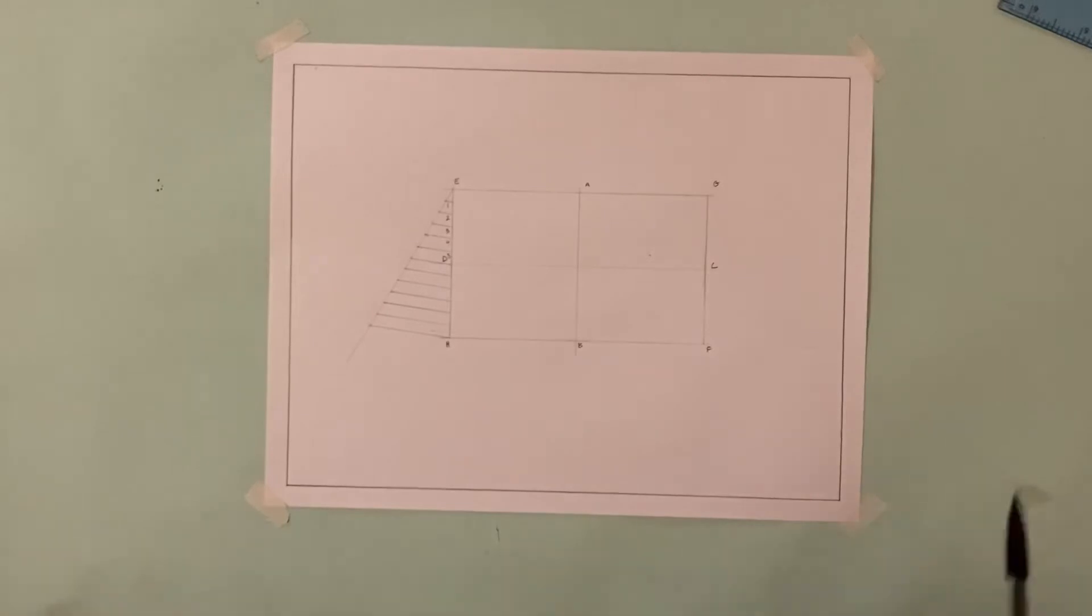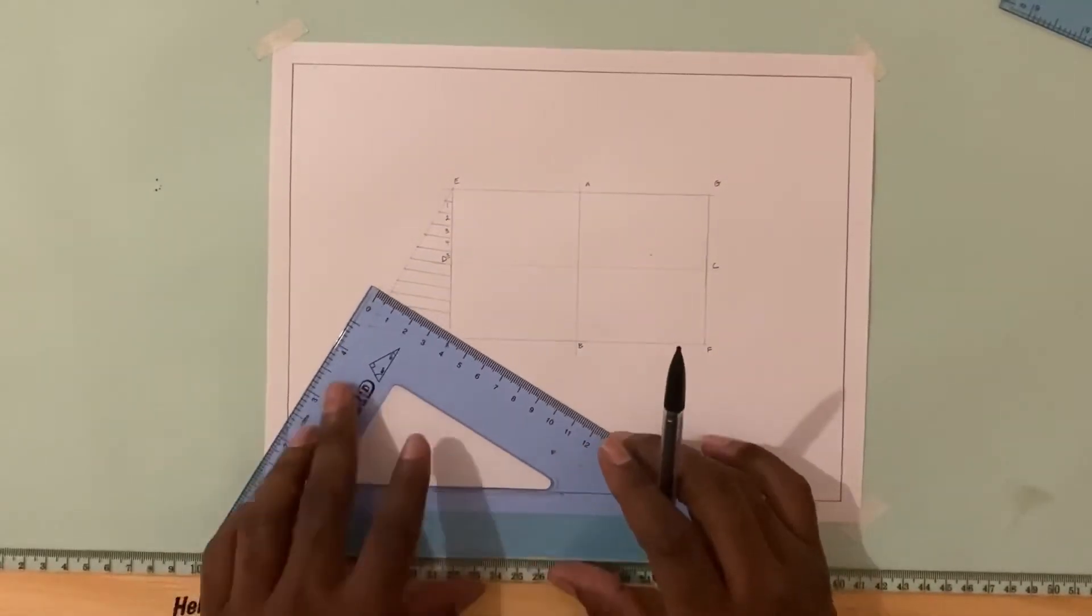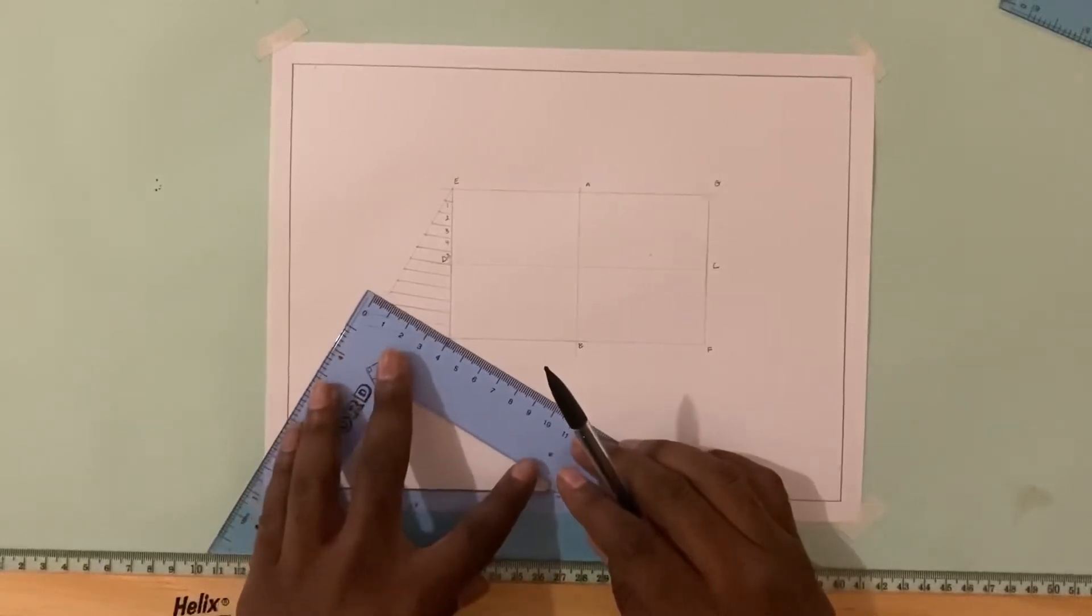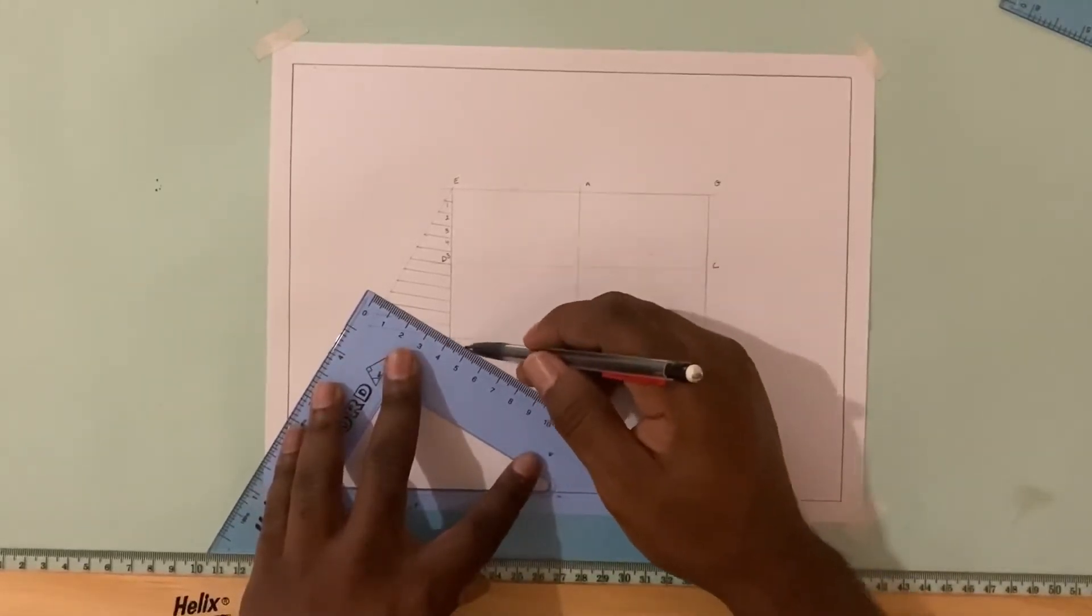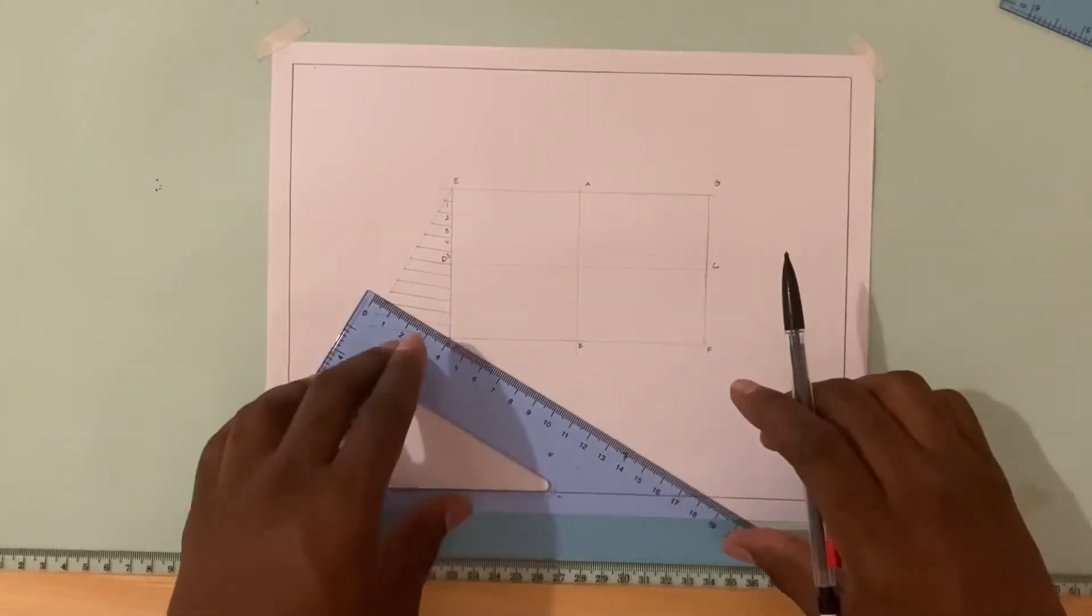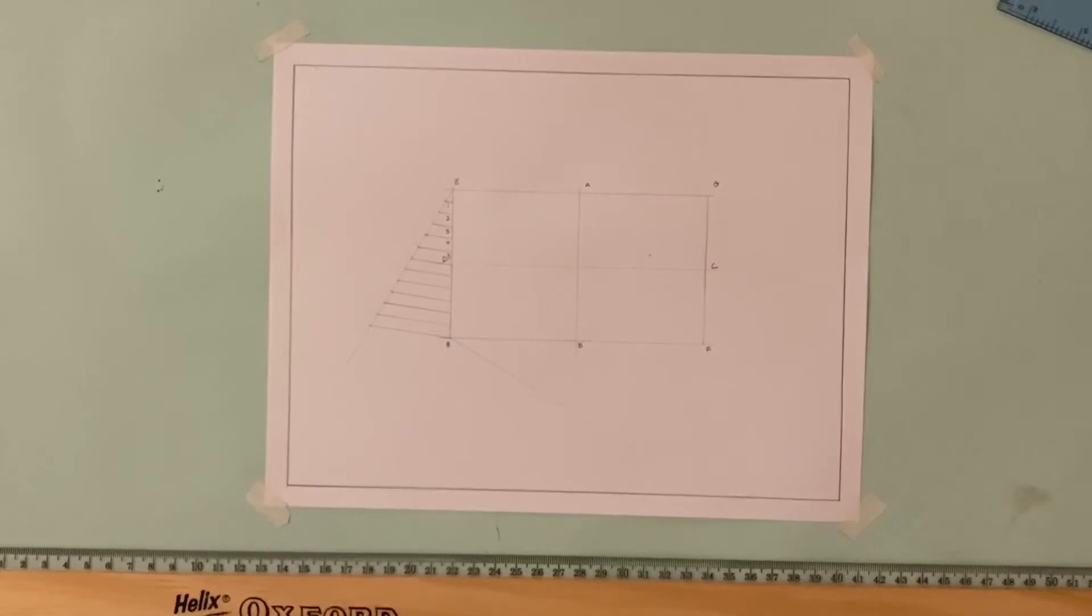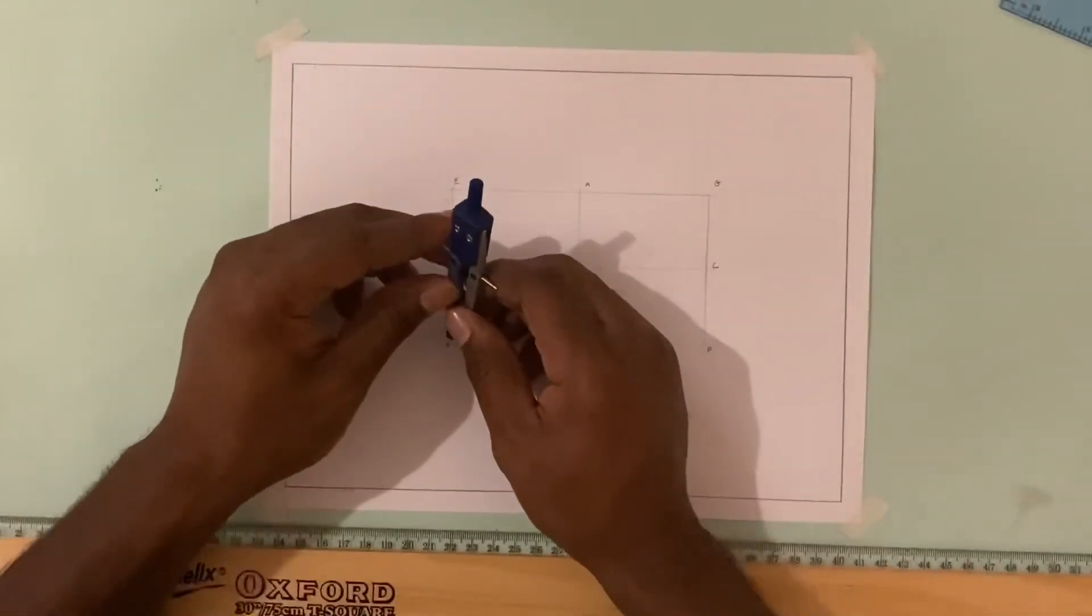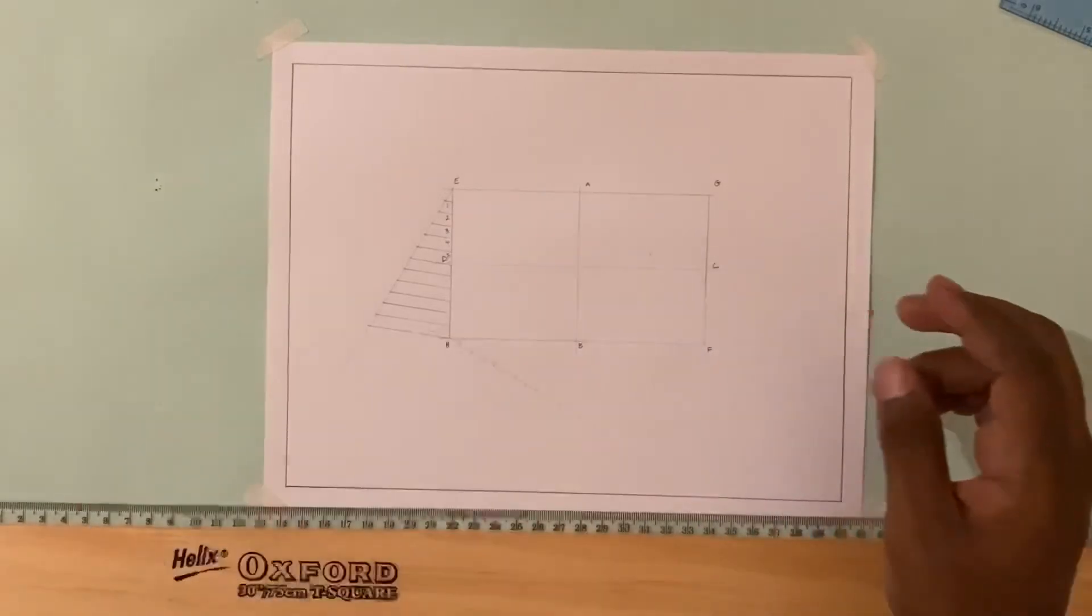I'm just going to go ahead now with my set square and draw a line at an angle. Then using my compass, I'm going to divide this line into 12 parts.